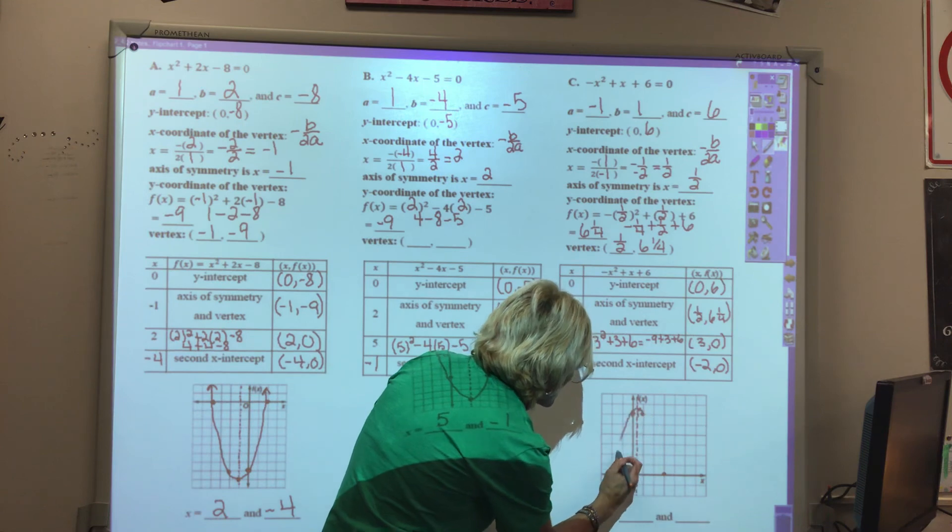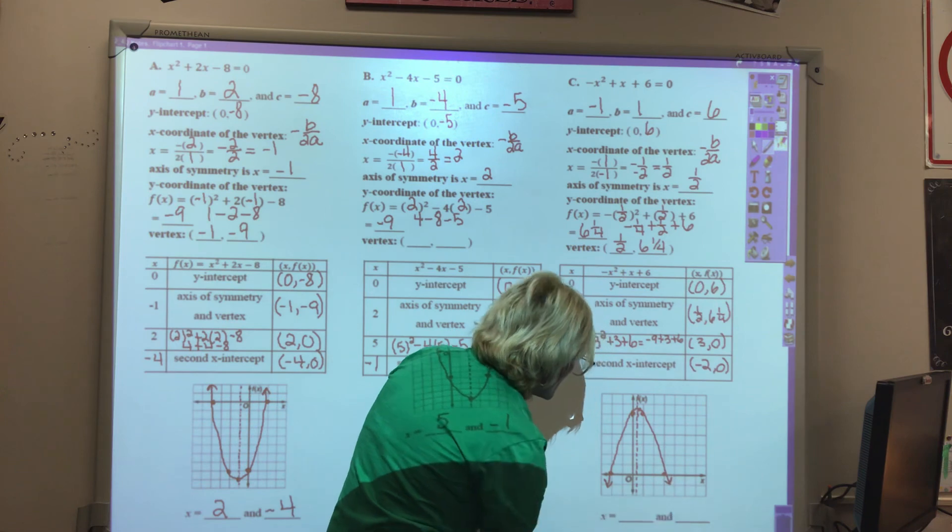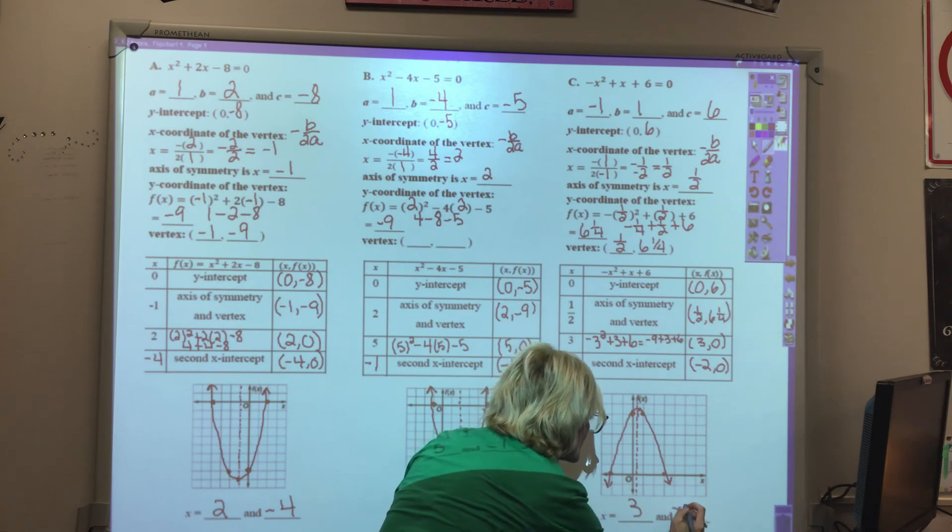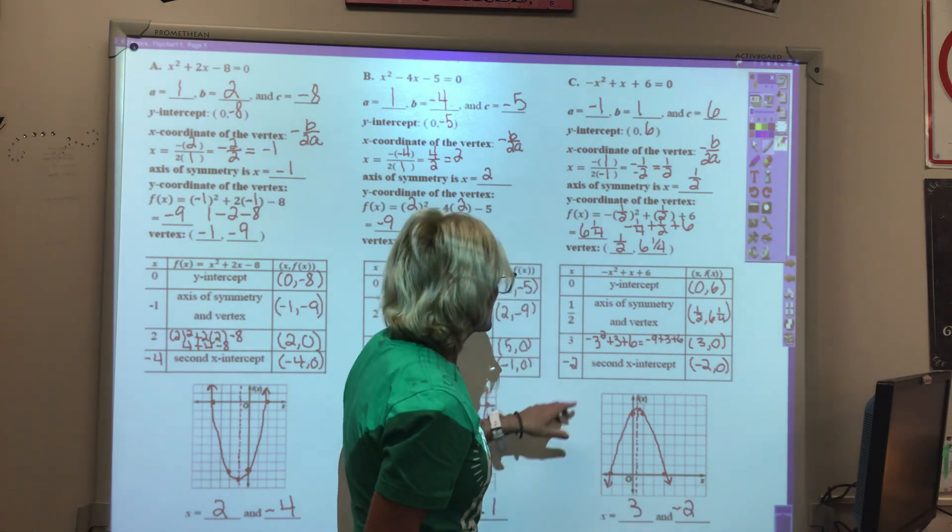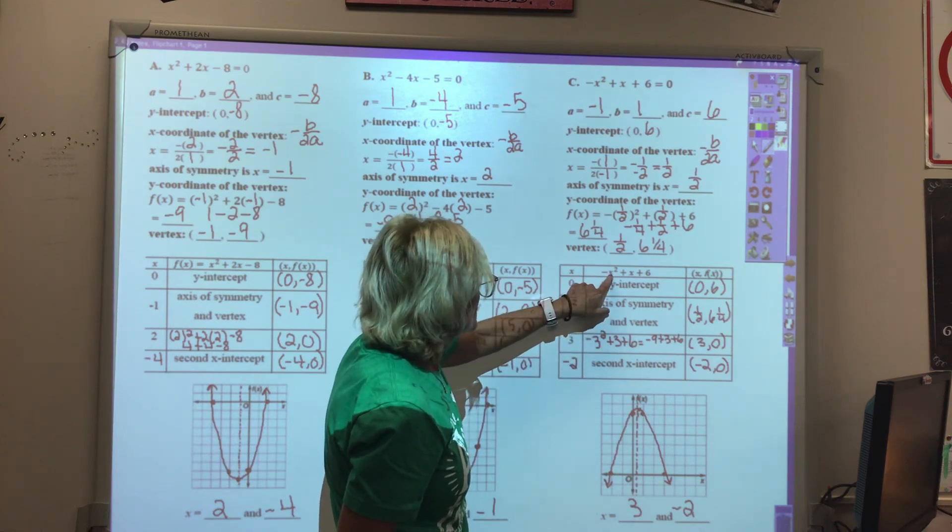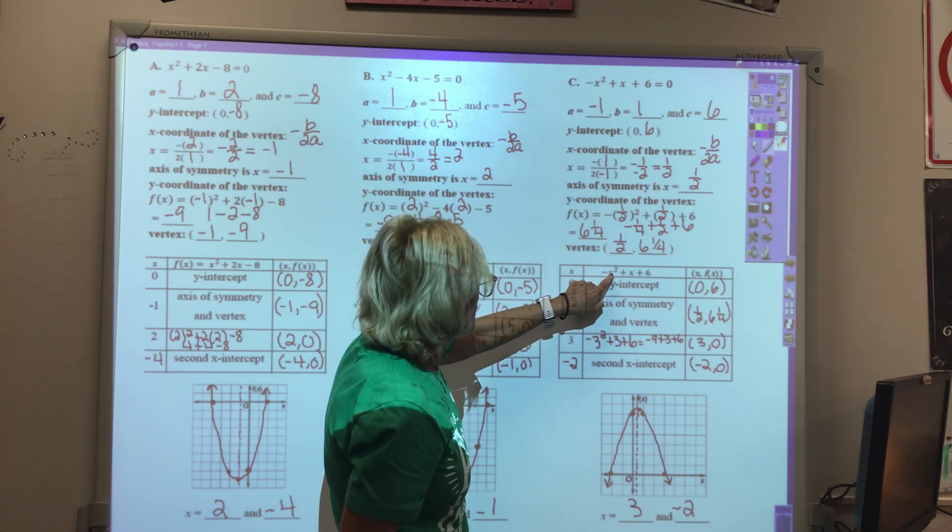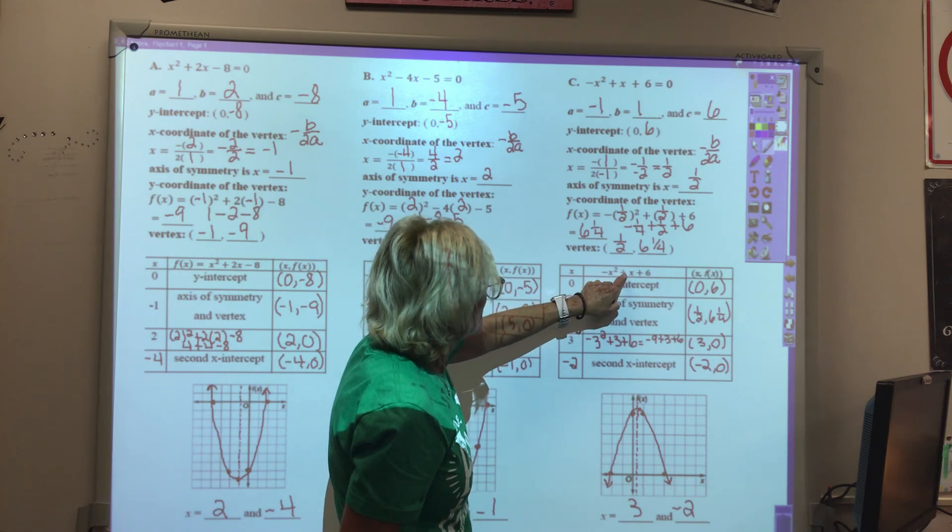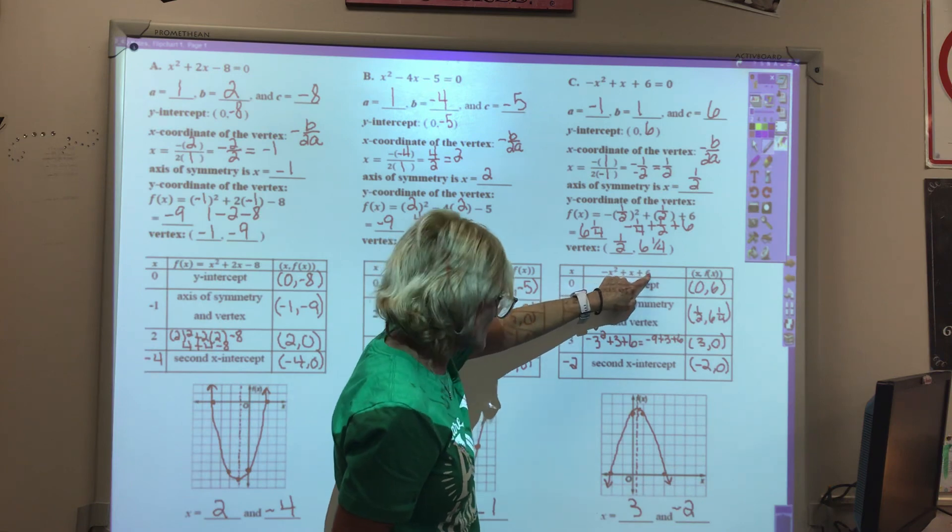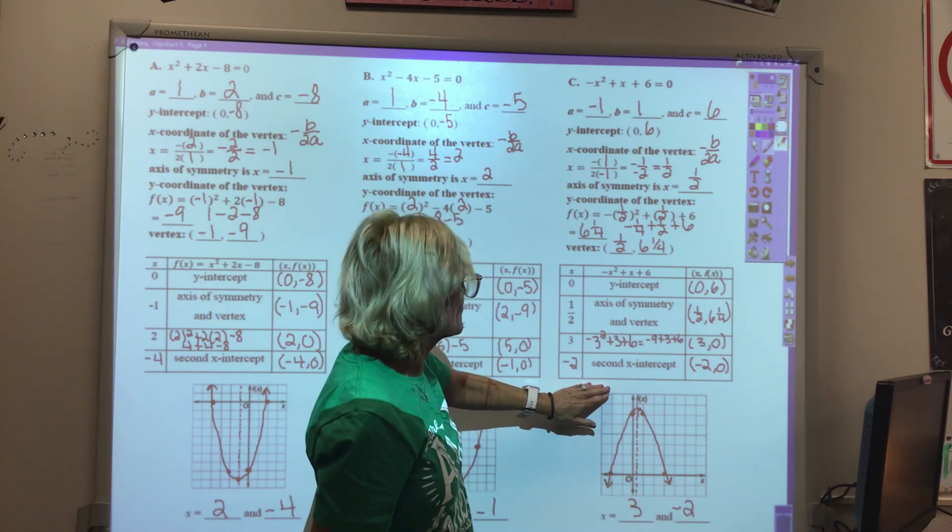We'll draw our line and put our two solutions at 3 and negative 2. If we try in the negative 2, negative 2 squared would be 4, the opposite of 4 would be negative 4 plus a negative 2 would be negative 6, plus 6 would be 0. So that does work in the function.